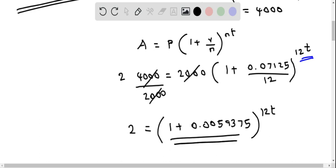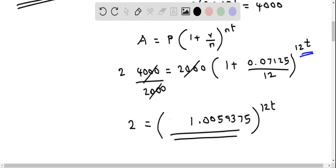Now we add to get 1 + 0.0059375 = 1.0059375, so the equation becomes 2 = (1.0059375)^(12t).